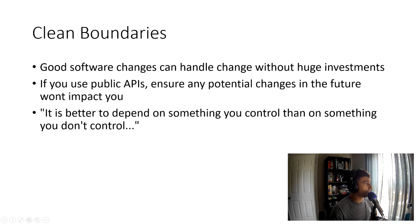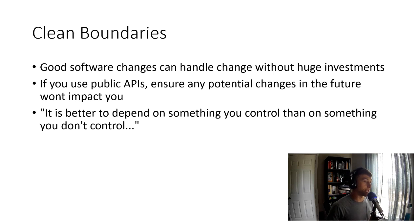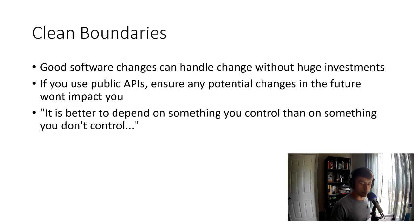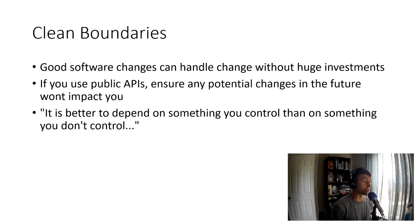The summary slide: good software can handle change without huge investments. If you use public APIs, ensure that potential future changes won't impact you — and this is where learning tests come in, making sure you truly understand the behavior and can preview it before implementing a third-party or public API. A closing quote from the end of the chapter: 'It is better to depend on something you can control than on something you don't control.' You hide the third-party implementation so you can better control what users can or can't see, making any future transitions to new behavior much cleaner.